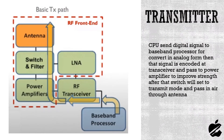The CPU sends a digital signal to the baseband processor for conversion into analog form. That signal is then encoded at the transceiver and passed to a power amplifier to improve strength. After that, the switch is set to transmit mode and the signal is passed into the air through the antenna.